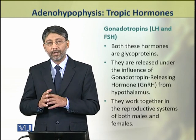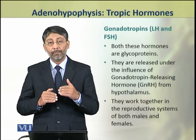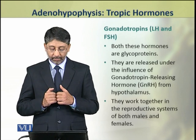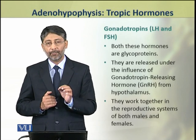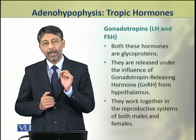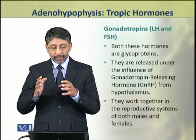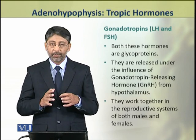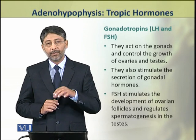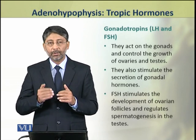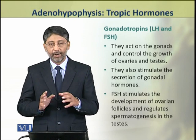The luteinizing hormone and follicle stimulating hormone, collectively called gonadotropins, are glycoproteins. They are released under the influence of gonadotropin releasing hormone (GnRH) from the hypothalamus. Both these hormones work together in the reproductive systems of both males and females. They act on the gonads and control the growth of ovaries and testes, and also stimulate the secretion of gonadal hormones.